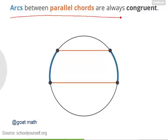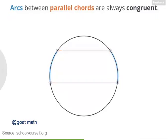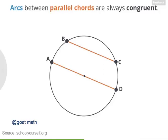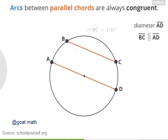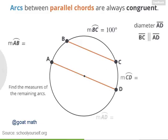Let's try applying this fact to a sample question. Here's a diameter, and let's draw in another parallel chord, and let's label these points A, B, C, and D. So AD is a diameter of the circle, and BC is parallel to AD. Now suppose the measure of arc BC is 100 degrees. Can you find the measures of the other three arcs? This is a tricky question, so if you get stuck, click down here.